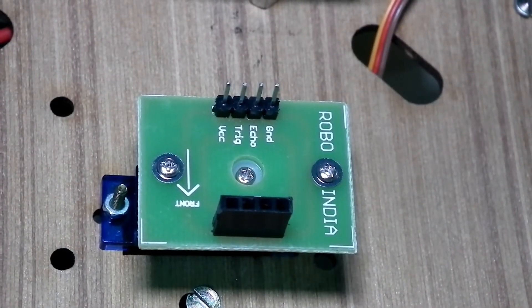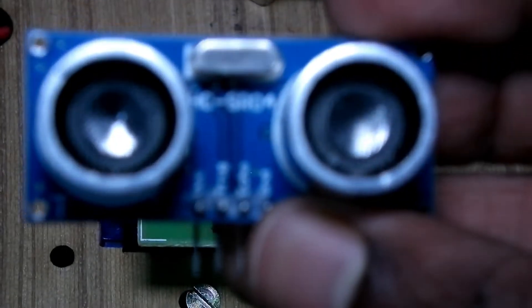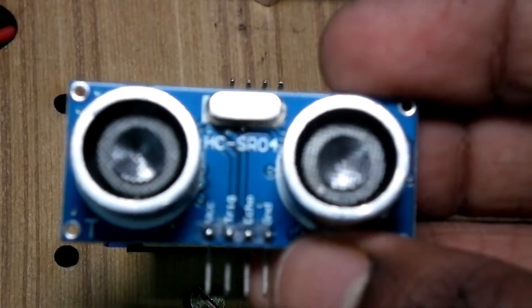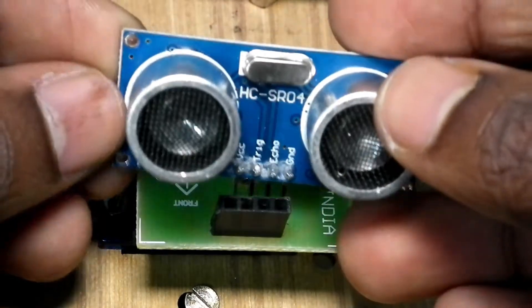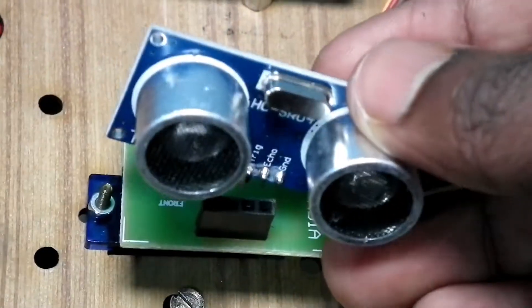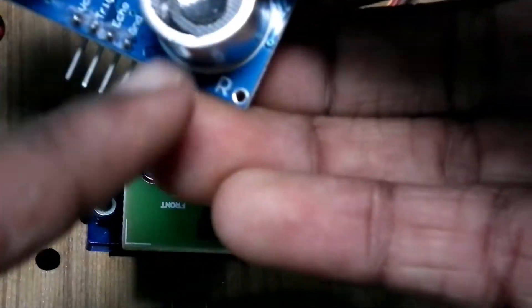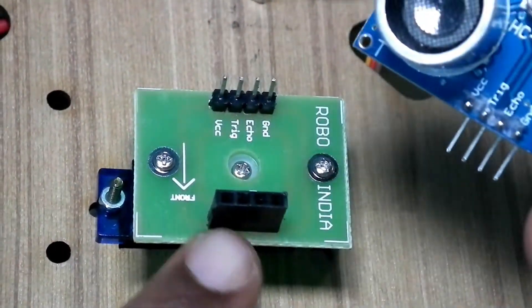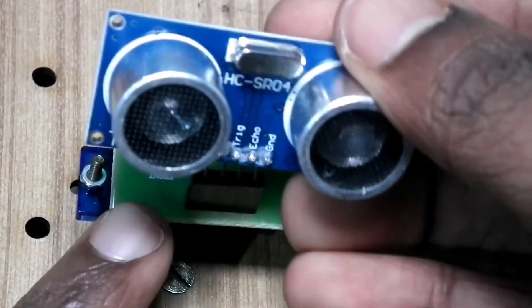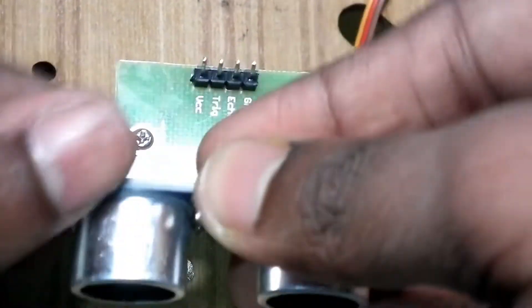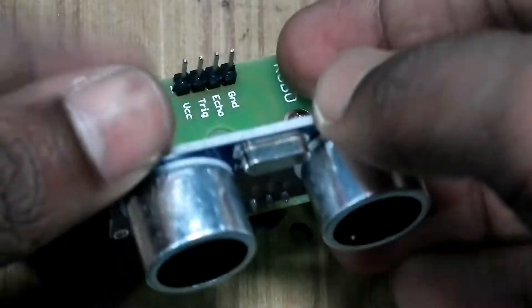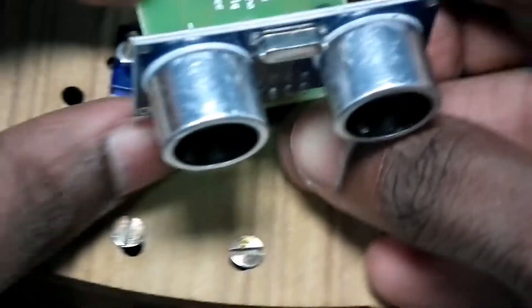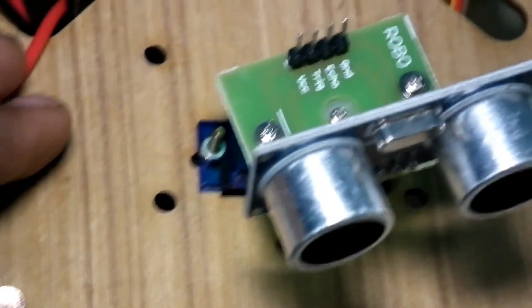Now what you have to do is take the ultrasonic sensor, which is HC-SR04. Place it on top. You can see there are four pins over here which will go into four holes over here. So align it and push it inside. That is how you fix it. Now it is done.